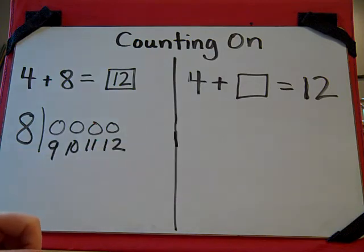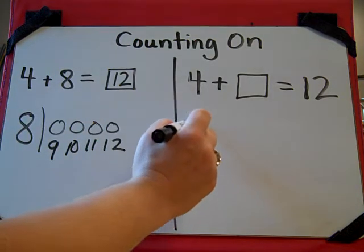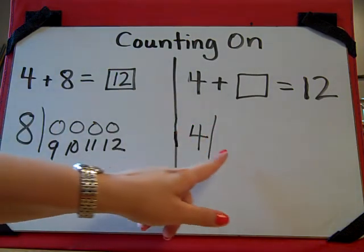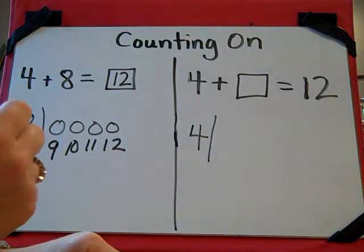When solving for an unknown addend, you start with the addend that you know, and you're going to count on until you reach your total.